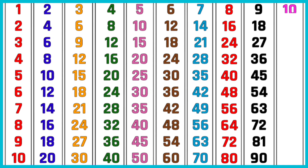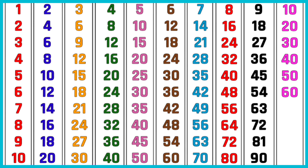10 ones are 10. 10 twos are 20. 10 threes are 30. 10 fours are 40. 10 fives are 50. 10 sixes are 60. 10 sevens are 70. 10 eights are 80. 10 nines are 90. 10 tens are 100.